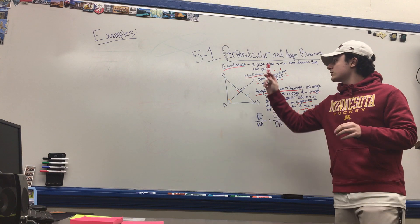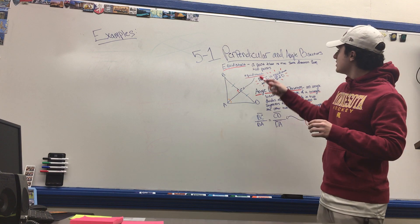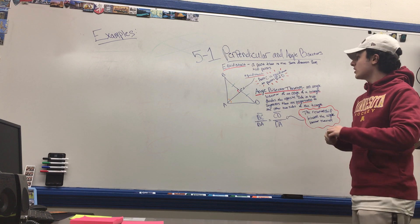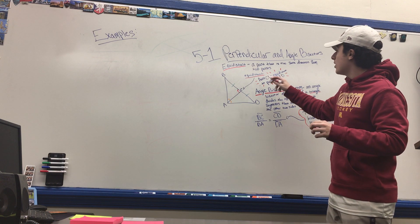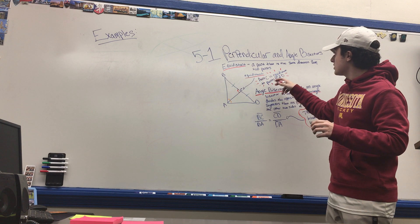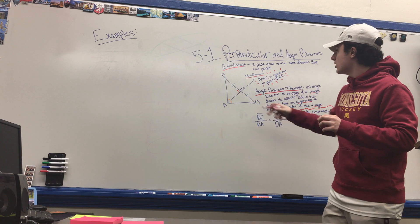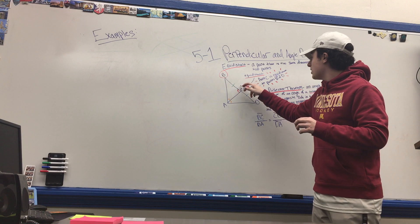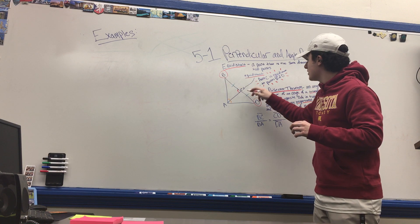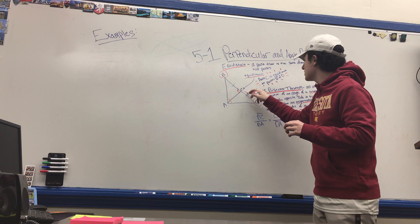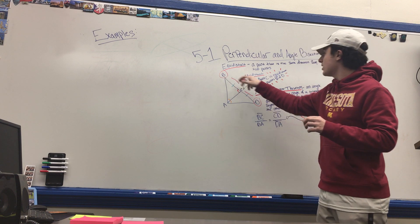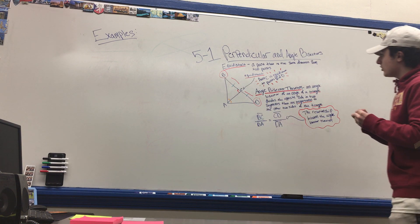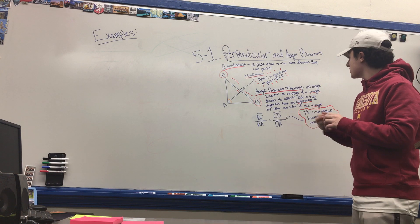First, we have equidistant. A point is equidistant when it is at the same distance from two points. As we can see, point C is equidistant to point B and point D — C is in the middle and is the same length from both of them.